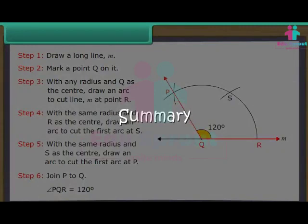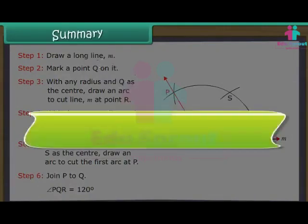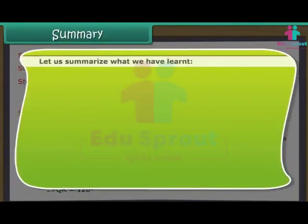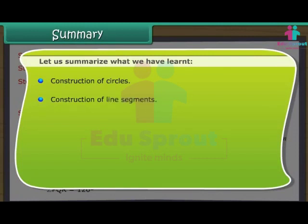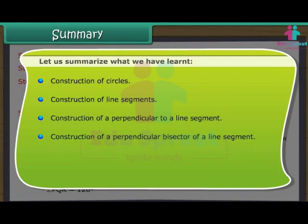Summary. Let us summarize what we have learnt: Construction of circles, construction of line segments, construction of a perpendicular to a line segment, construction of a perpendicular bisector of a line segment, construction of an angle bisector, and construction of angles.